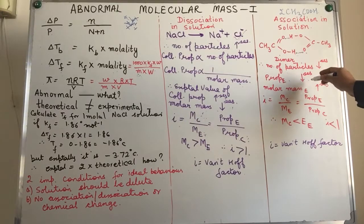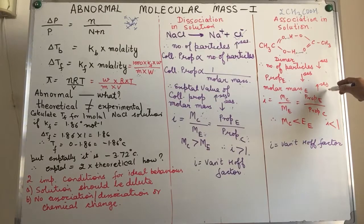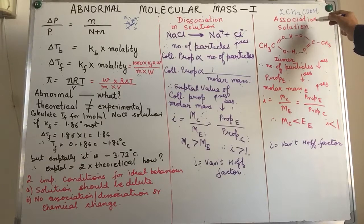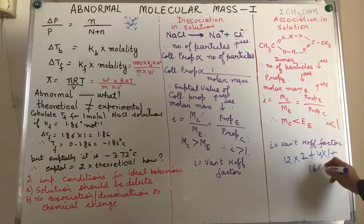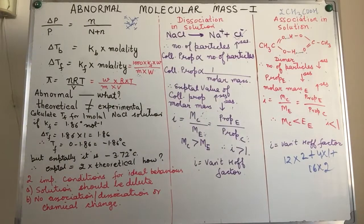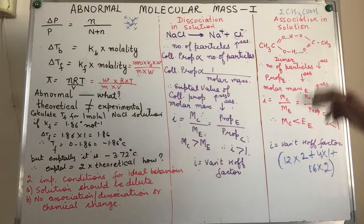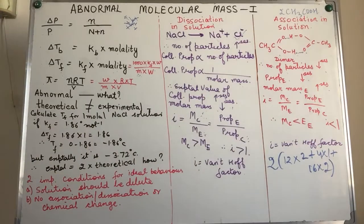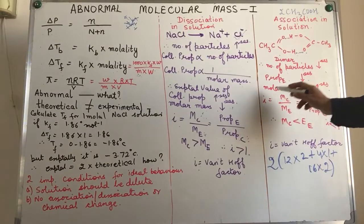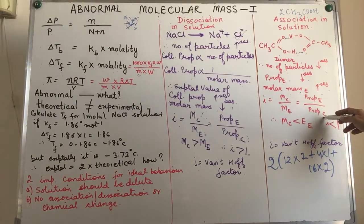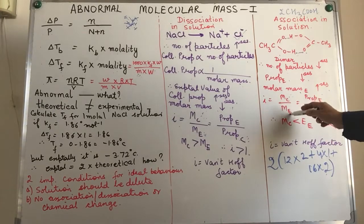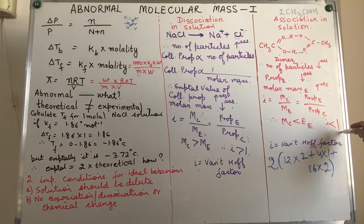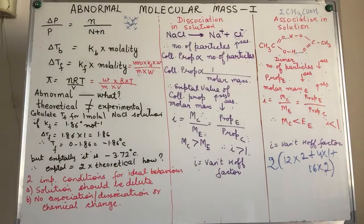The experimental value of the colligative property decreases in the case of association. The molar mass observed experimentally will be more than the calculated value. For acetic acid (CH₃COOH), the calculated molar mass is 12×2 + 1×4 + 16×2 = 60, but experimentally using colligative properties it shows a value double that — approximately 120. So iota = Mc/Me, where Mc (≈60) is lower than Me (≈120). Therefore, iota is less than one in the case of substances which undergo association in solution.